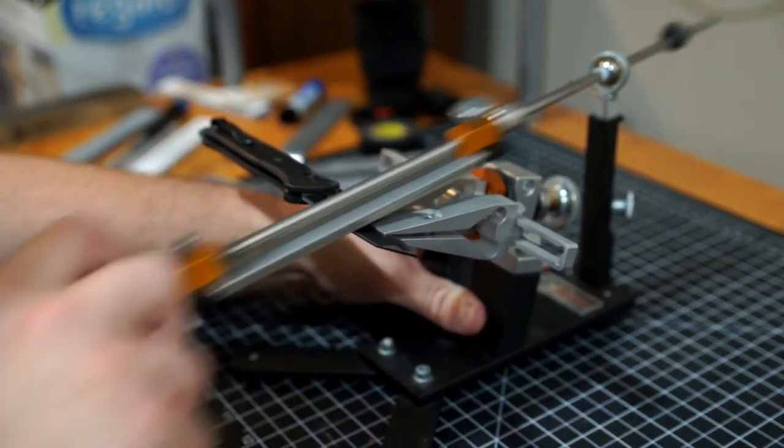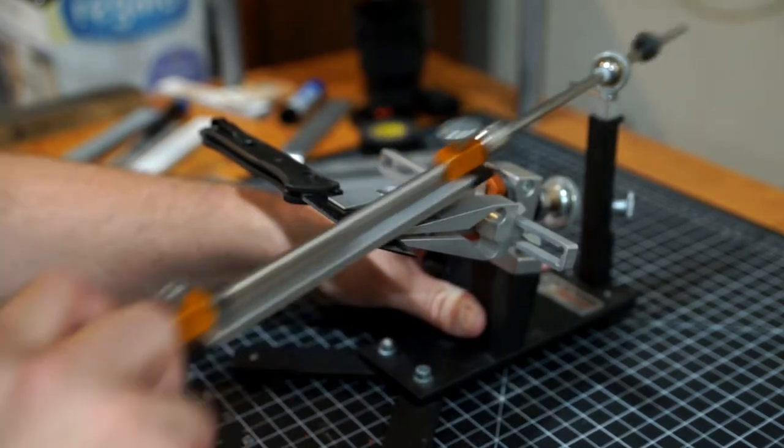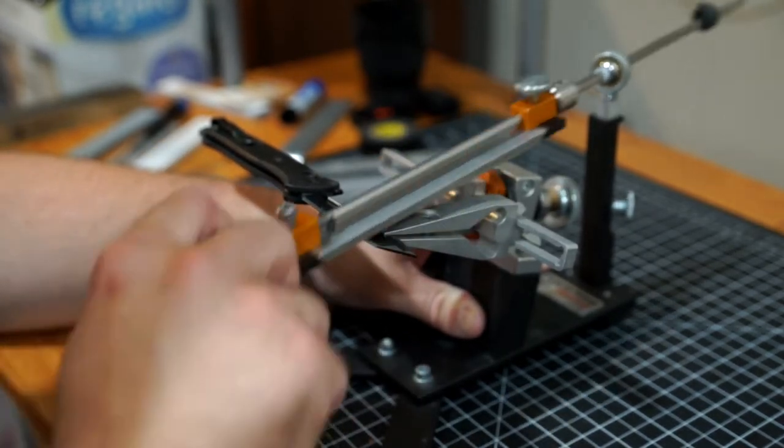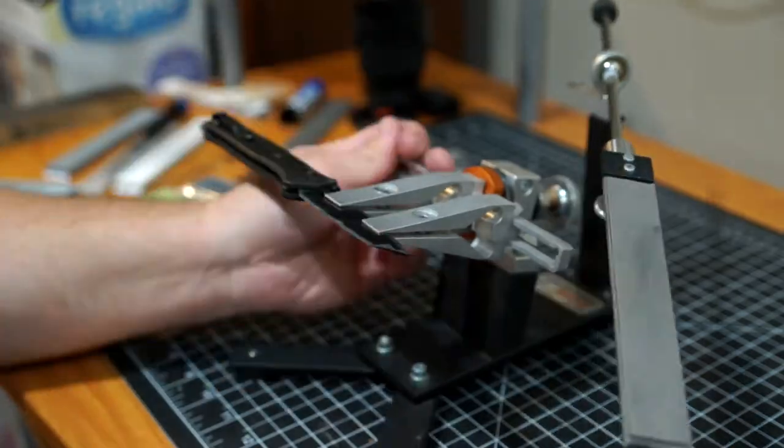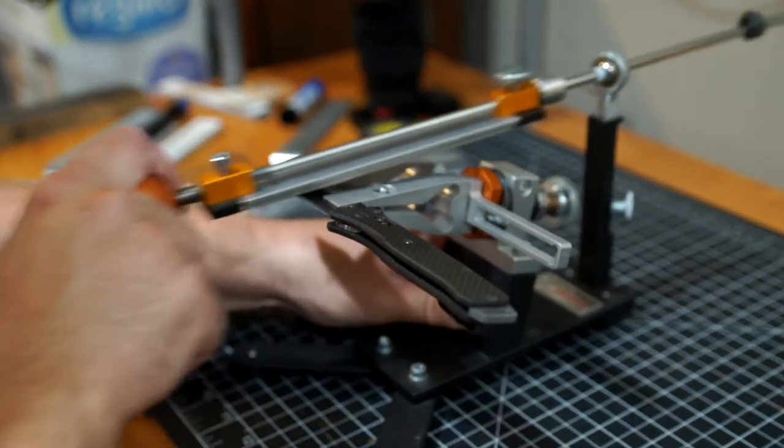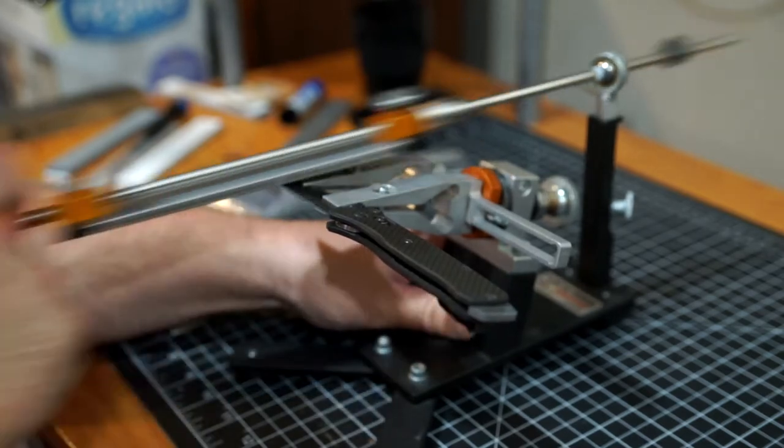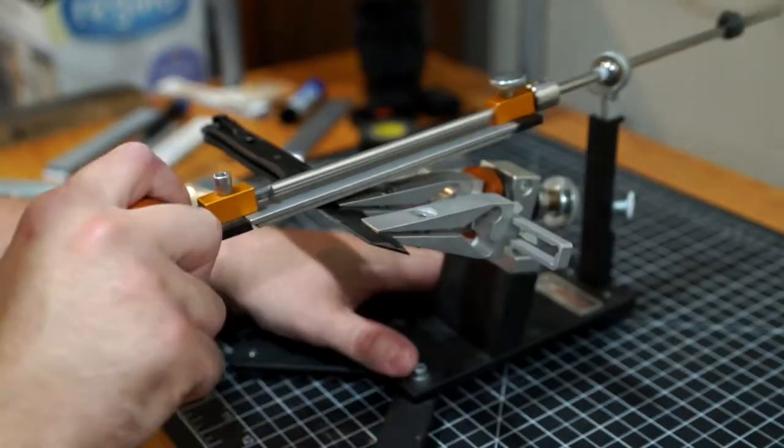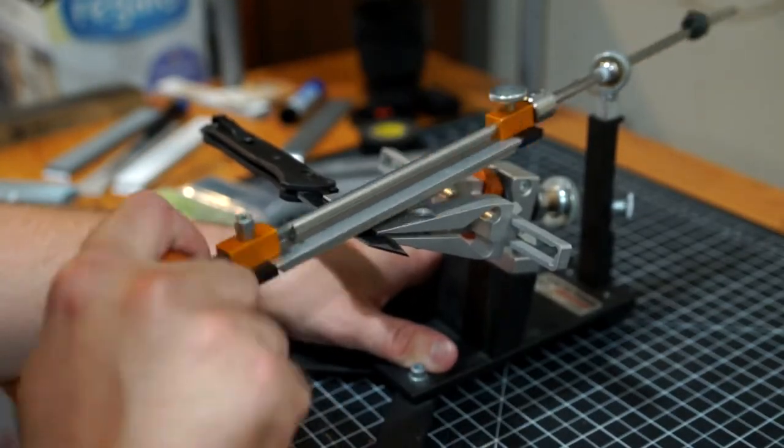This 3V I would say is probably like 59 Rockwell, maybe a little softer. It didn't sharpen as easily as I thought, but it wasn't hard to sharpen.